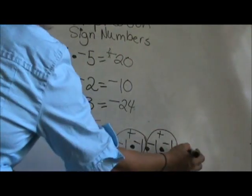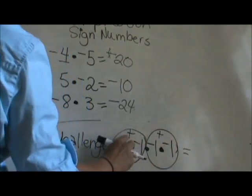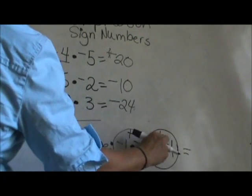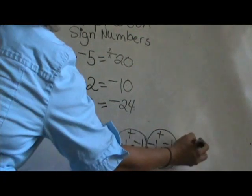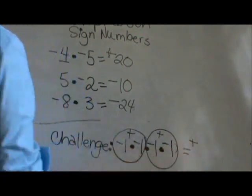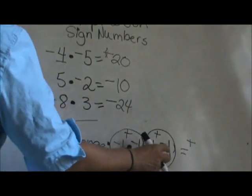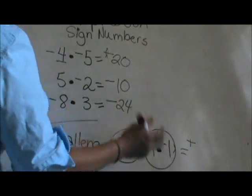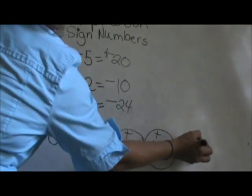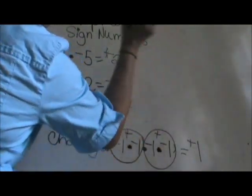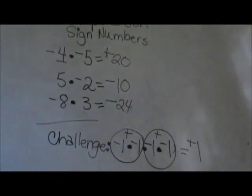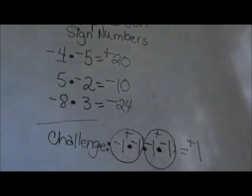These two ones are going to pair up and become positive. So the answer is just a positive times a positive, which is a positive. So 1 times 1 times 1 times 1 — don't be fooled — that is 1. The answer to that challenge problem is positive 1. Hope this was helpful.